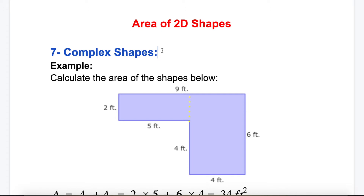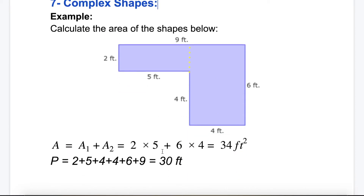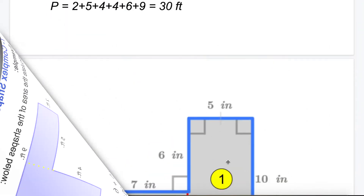I've already split it for you — you can see the dotted yellow line. Now I have two rectangles. The first rectangle has length 5 and width 2, so Area 1 is 5 times 2. The second rectangle has length 6 and width 4, so 6 times 4 is 24. Area 1 plus Area 2: 2 times 5 plus 6 times 4 equals 34 square feet. For the perimeter, I added all the sides and got 30 feet.